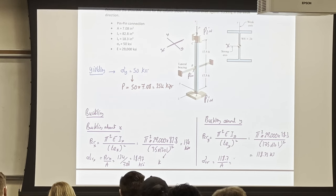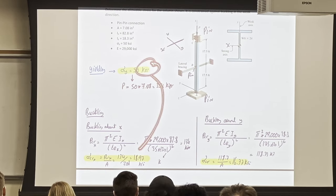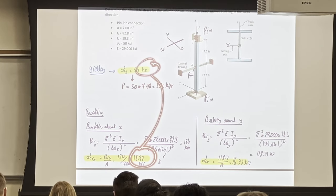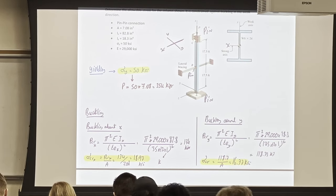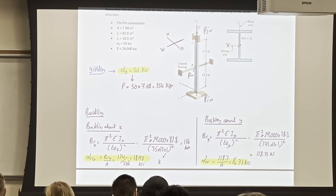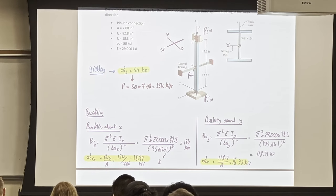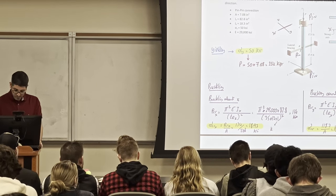Comparing all stresses: σ_yield = 50 ksi, σ_CR_X = 18.97 ksi, σ_CR_Y = 16.77 ksi. The design stress is the minimum, which is 16.77 ksi — buckling about Y controls. Although we restrained the Y direction with bracing, the capacity was still reduced to 16.77 ksi compared to 50 ksi for yielding. That's why we take 16.77 ksi as the governing design stress. Any questions? We'll see you tomorrow.